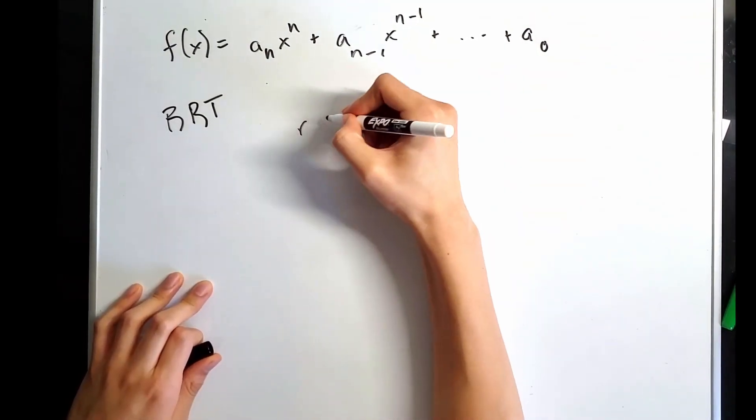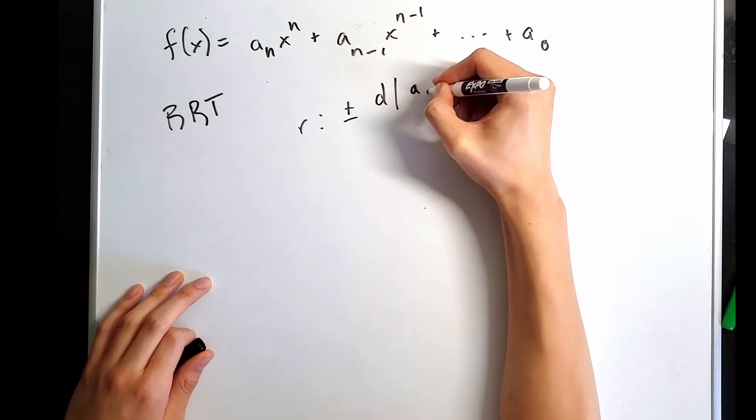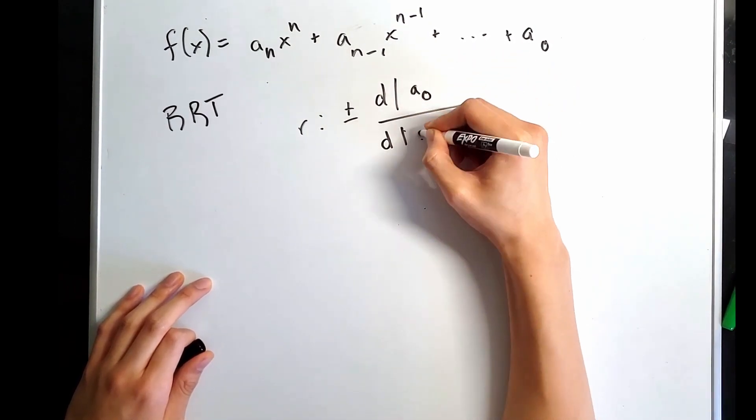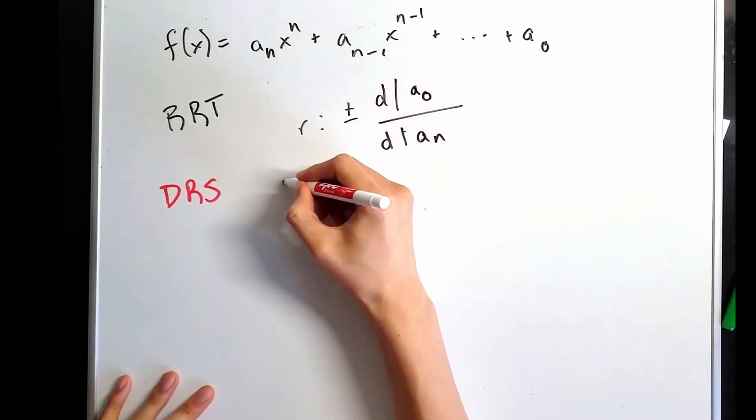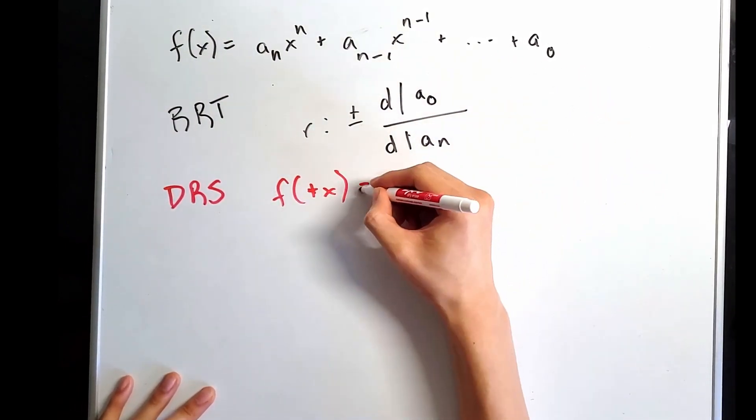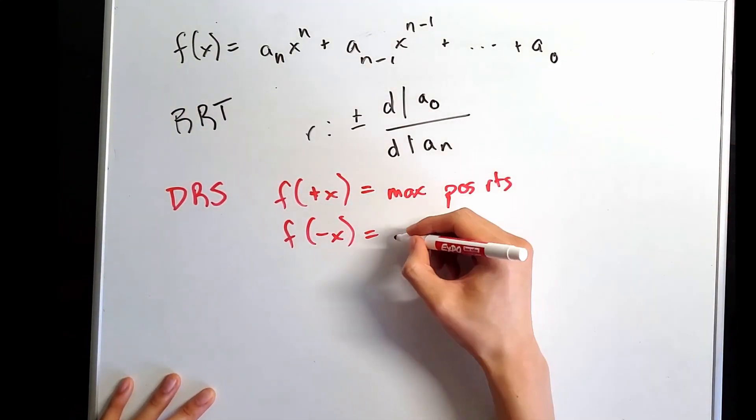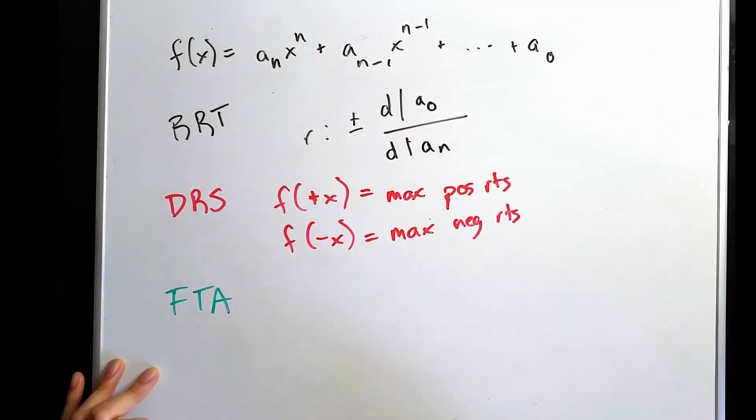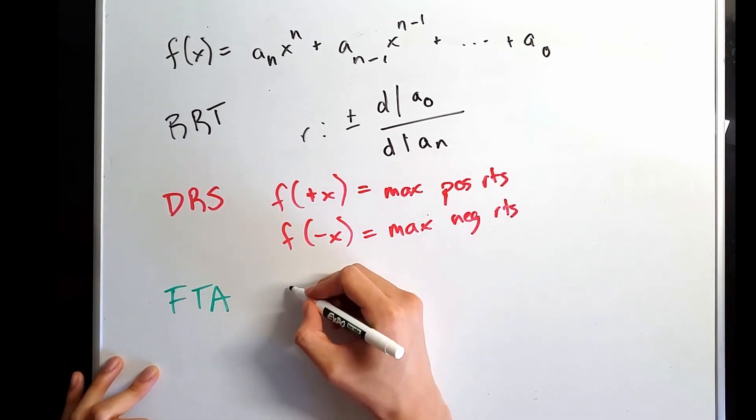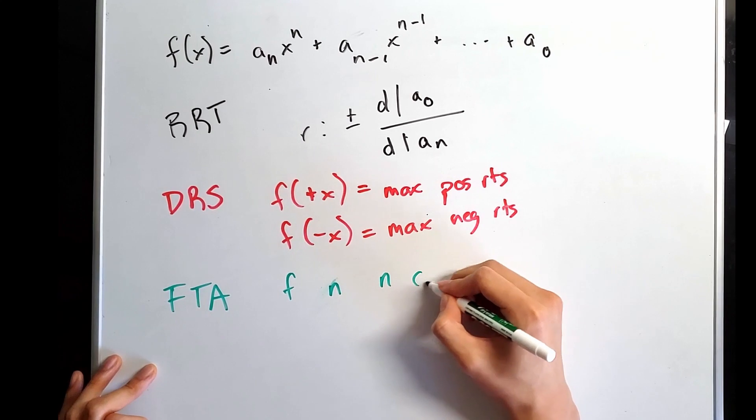The rational root theorem defines that the possible rational roots of f of x is plus or minus all divisors of a zero over all divisors of a n. Descartes' rule of signs: let's say f of x, the number of sign changes between each of the coefficients sequentially is the max number of positive roots. And if you substitute negative x and count the sign changes again, you will get the max number of negative roots. The fundamental theorem of algebra states that in a function of degree max of n, then there should be exactly n complex roots.